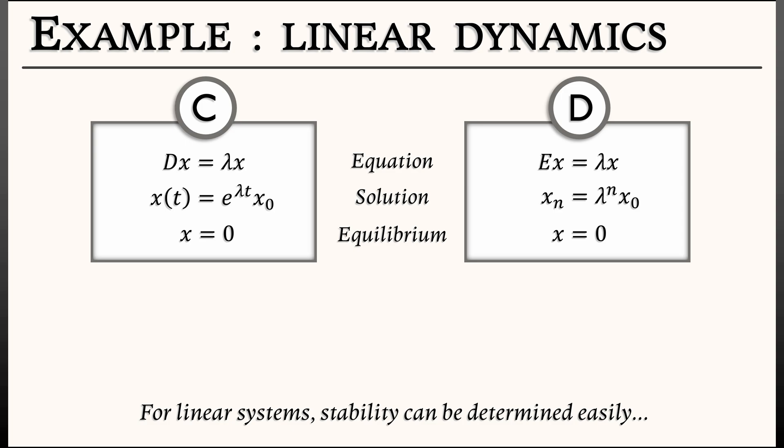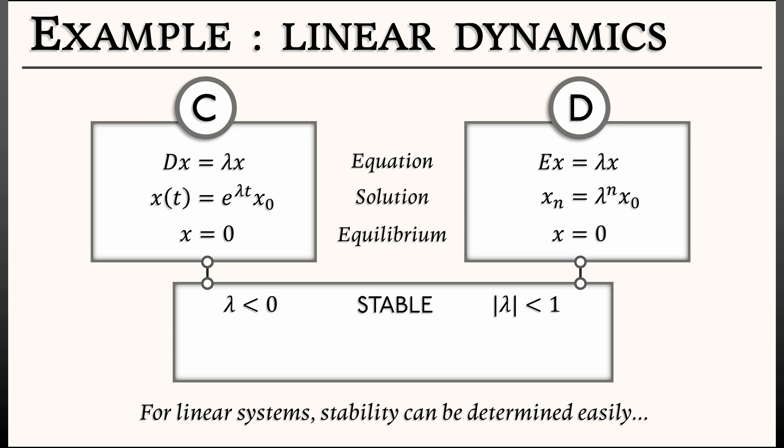Now, let's analyze the stabilities of these equilibria at zero in continuous and discrete time. Where do we have a stable equilibrium, where a nearby solution converges back to zero? In continuous time, it's where lambda is negative. And in discrete time, it's where lambda is less than one in absolute value. On the other hand, if we want to look at when we have unstable equilibria, in continuous time, it's where lambda is positive. In discrete time, it's where lambda is bigger than one in absolute value.